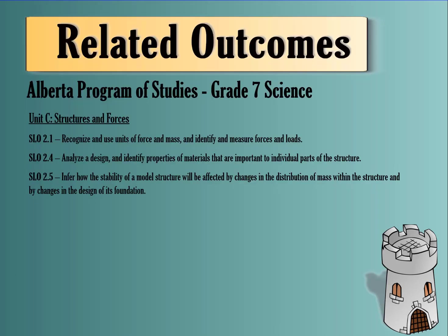The learning outcomes covered today for grade 7 science: Specific Learner Outcome 2.1 - Recognize and use units of force and mass and identify and measure forces and loads. Analyze a design and identify properties and materials important to individual parts of the structure, and infer how the stability of a model structure will be affected by changes in the distribution of mass within the structure and by changes in the design of its foundation.